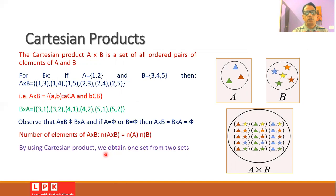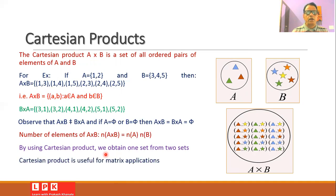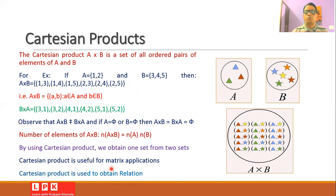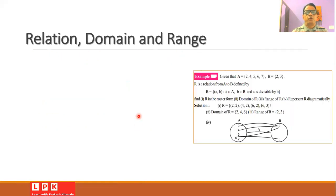By using the Cartesian product, we take two different sets and obtain a third set from them. The Cartesian product is a very useful operation because by making use of it we can perform matrix applications. Also, by using the Cartesian product it is possible to define the relation between two sets.